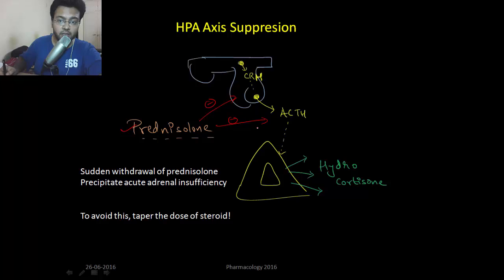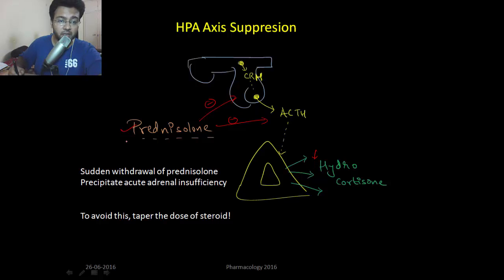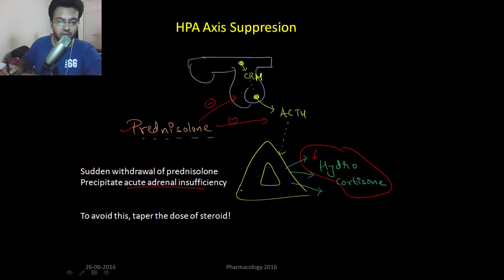As a result of this negative feedback, there will be decreased production of endogenous steroids. The problem is, if you suddenly withdraw the prednisolone, there will be no more hydrocortisone to serve the body's needs. This will be called acute adrenal insufficiency, and that's why it is advised to taper the dose of steroids.